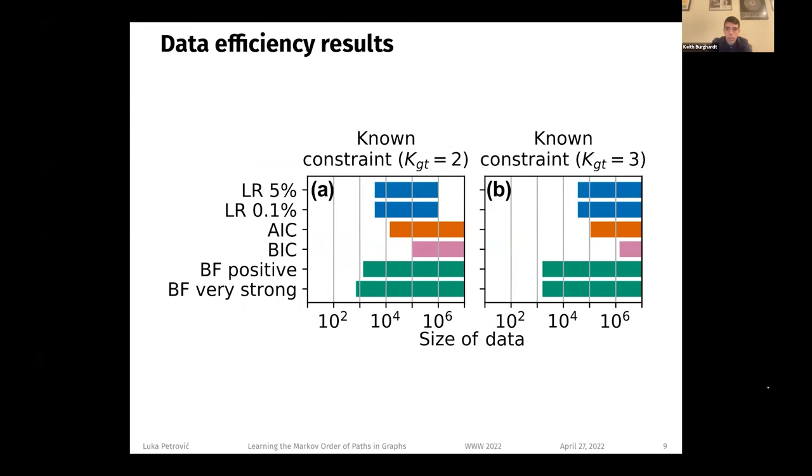So in figure A, we see the intervals from the previous graphic. On x-axis, we again have data sizes, but on y-axis, we plotted different methods. So the differences in terms of data efficiency are huge. Note that x-axis has logarithmic scale. So that means that Bayes factors are two orders of magnitude better than BIC, and they are one order of magnitude better than AIC and likelihood ratio test. In figure B, we see that the results also hold when the ground truth order is three.